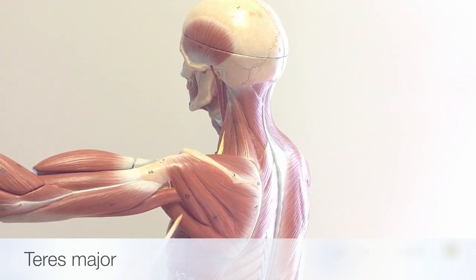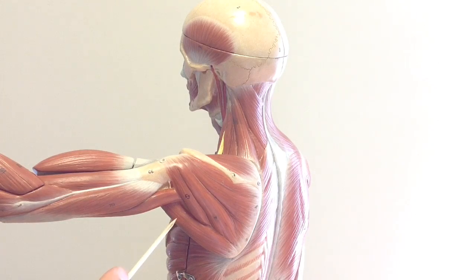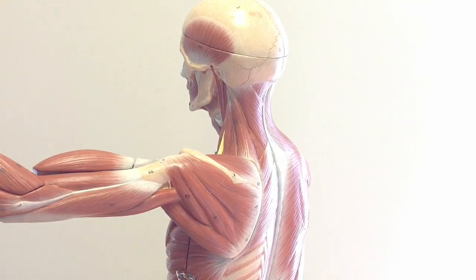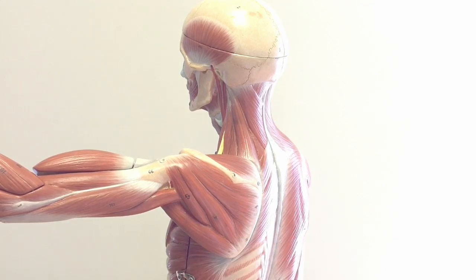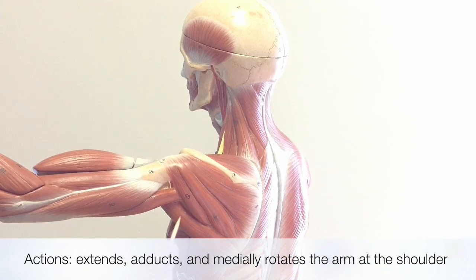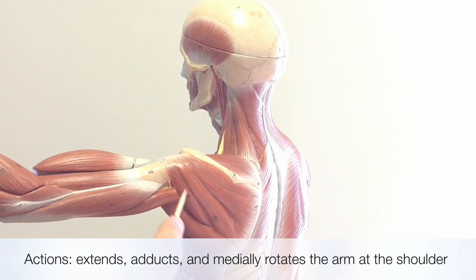This is the teres major, located just inferior to the teres minor. Major is a reference to it being the larger of the two teres muscles. Its origin is on the lateral border and inferior angle of the scapula, and it inserts onto the anterior humerus. The actions of the teres major include extension, adduction, and medial rotation of the arm at the shoulder. Unlike the teres minor, the teres major is not one of the rotator cuff muscles.